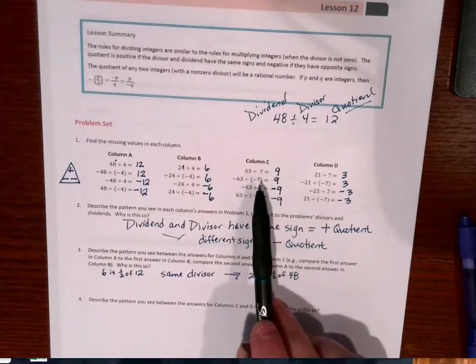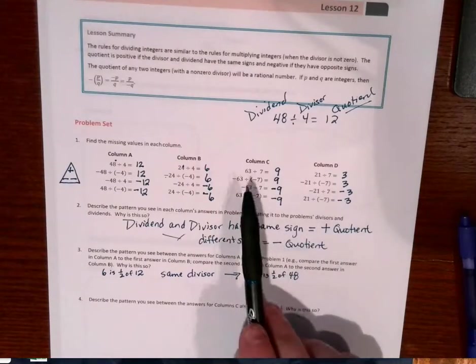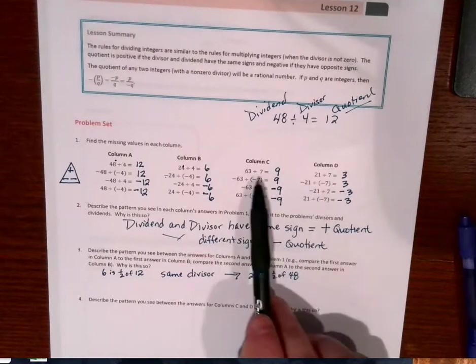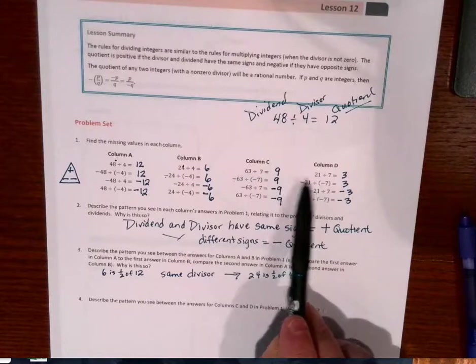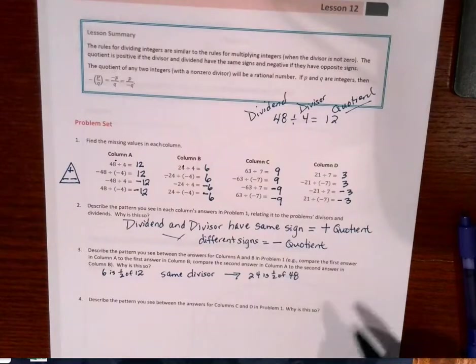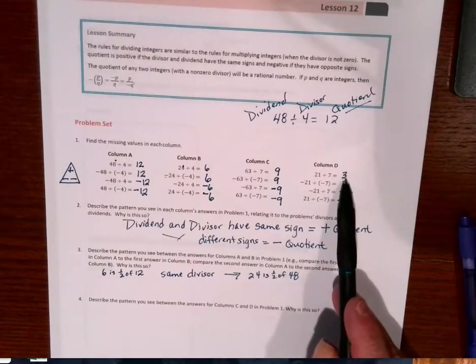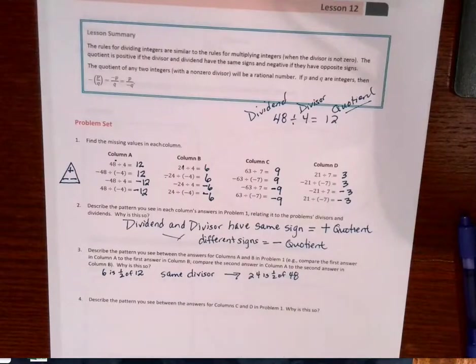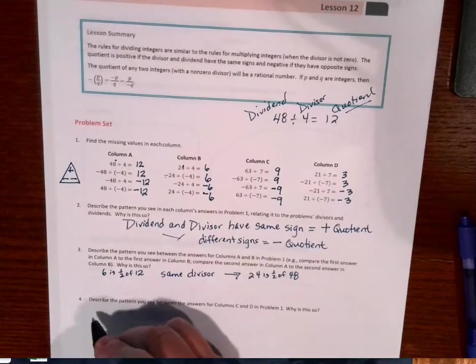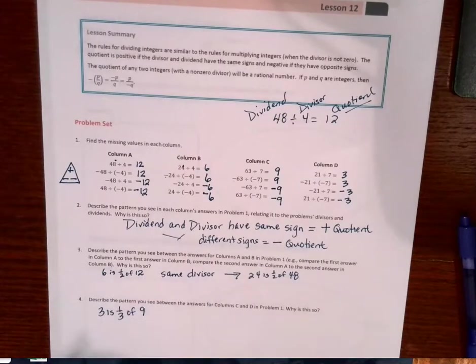So what about these two in column C and D? Off the top of your head, I don't know about 63 and 21, but what about 3 and 9? What do I know about 3 and 9? Well, let's see. 3 is one third of 9. Or 9 divided by 3. Right? 9 divided by 3. Right? Okay.